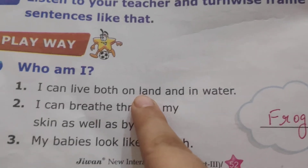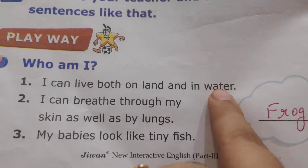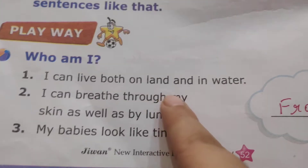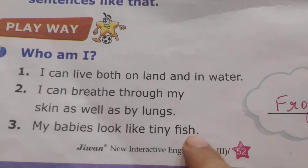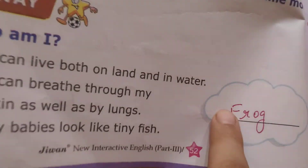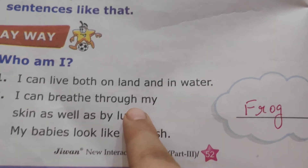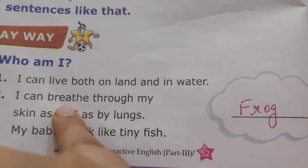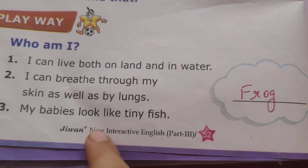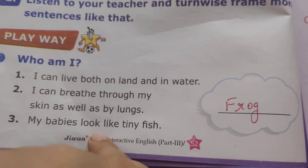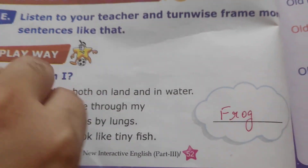Now listen to this: I can live both on land and in water. I can breathe through my skin as well as my lungs. My babies look like tiny fish. Who am I? I am a frog. Frogs can live on land and in water, and frogs can breathe through their skin as well. Their babies look like tiny fishes.